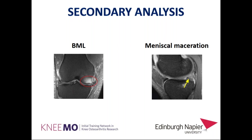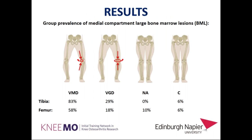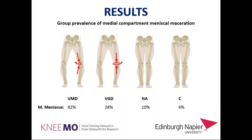In the other secondary analysis, we compared MRI biomarkers — specifically bone marrow lesions, which are bone bruises linked to high joint load, and meniscal maceration, a meniscal lesion caused by prolonged overloading in which the meniscus is macerated and barely distinguishable on MRI. The prevalence of bone marrow lesions in the medial compartment of both tibia and femur was much higher in the varus medial disease group than in all other groups. The same result was obtained for medial meniscal maceration, which had a much higher prevalence in the varus and medial disease group.